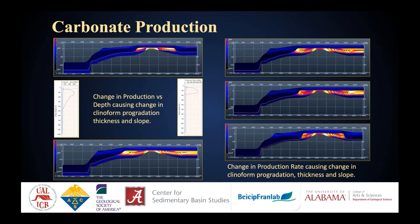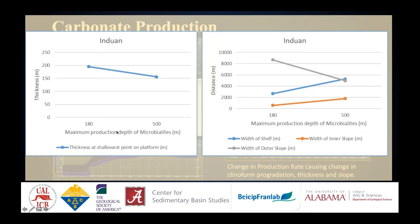Uncertainty in carbonate production is measured in two types: production versus depth, and carbonate production versus time or production rate. By changing the maximum depth of microbial production, it results in changing the amount of progradation of the margin and shelf. The graphs show results for production versus changing depth of microbialites only. There is a slight change in thickness of the platform, but a significant change in the width of the shelf and slope when we change the maximum production depth of the microbialites.